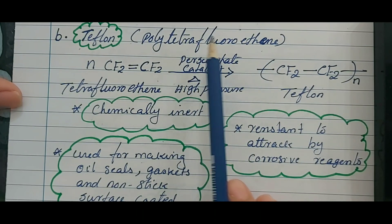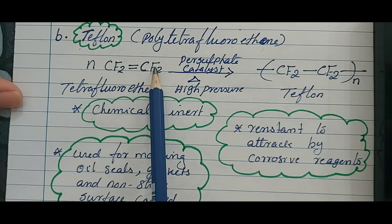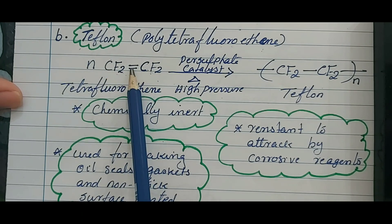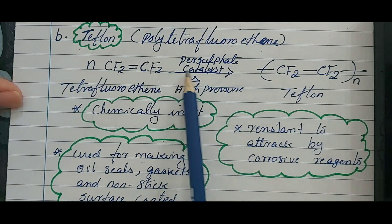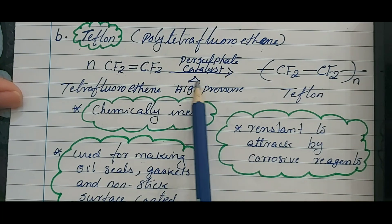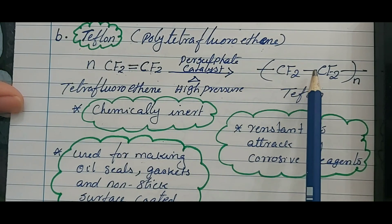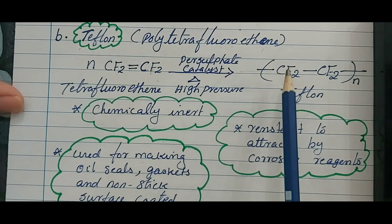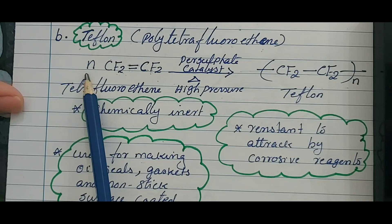The second addition polymer is Teflon. Its chemical name is polytetrafluoroethene. The monomer is tetrafluoroethene — CF₂=CF₂ — where tetra means four, fluoro means fluorine, and ethene means two carbons with a double bond. In the presence of a persulfate catalyst with heat and high pressure, the pi bond breaks and addition polymerization takes place: CF₂=CF₂ becomes –(CF₂–CF₂)ₙ–.